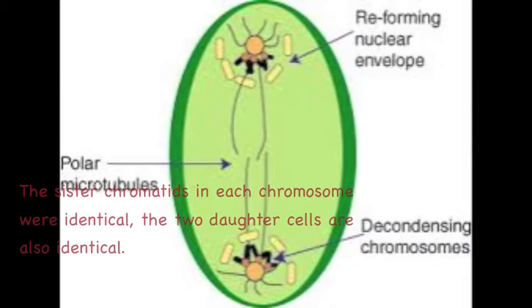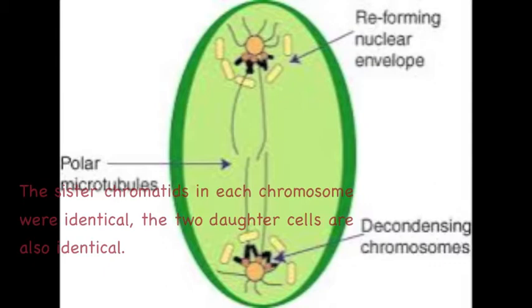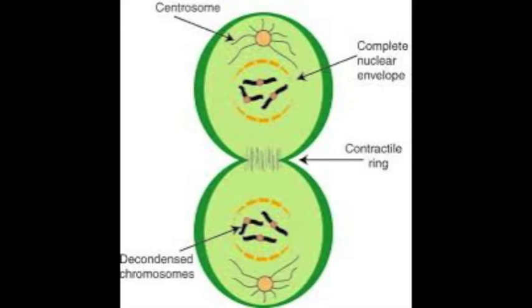This brings us to telophase. Here, the two nuclear membrane nuclei begin to reappear at each pole. The chromosomes begin to unravel and disappear from view. And I think I understand cytokinesis. This is when the cytoplasm divides by a ring called the cleavage furrow, constricting around the middle of the cell, which pinches it into two.